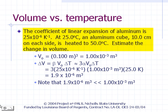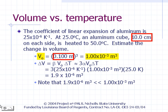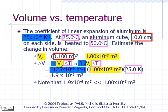Suppose you have an aluminum cube 10 centimeters on each side at 25 degrees Celsius. Estimate the change in volume of the cube if it is heated to 50 degrees Celsius, given that the coefficient of linear expansion of aluminum is 25 × 10⁻⁶ per Kelvin. The volume at 25 degrees is 1 × 10⁻³ cubic meters. We estimate beta as 3 times alpha. The temperature change is 25 Kelvin. The calculation gives a volume change of 1.9 × 10⁻⁶ cubic meters, which is reliable since it is very small compared to the original volume.